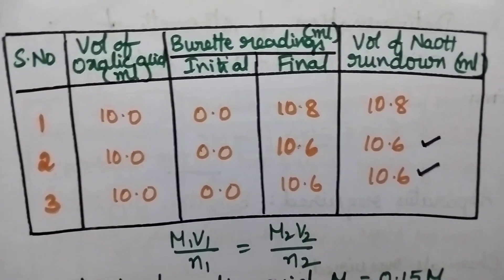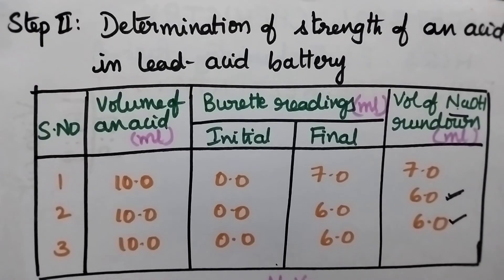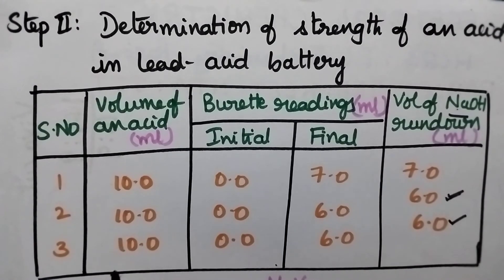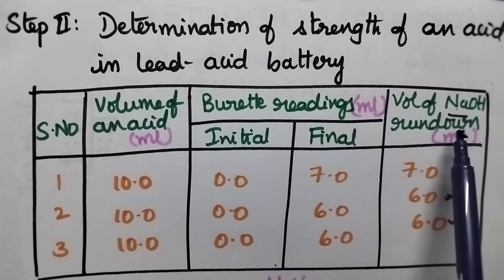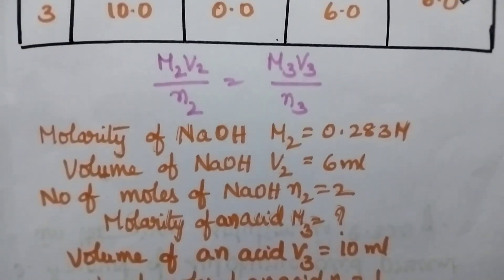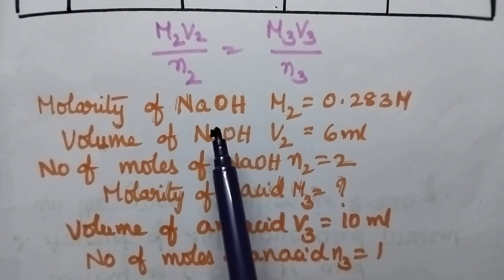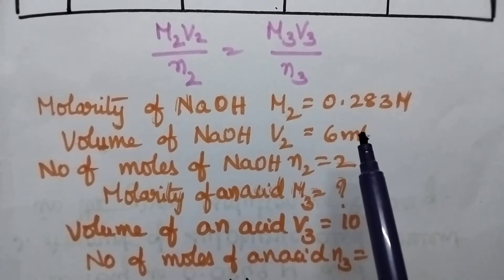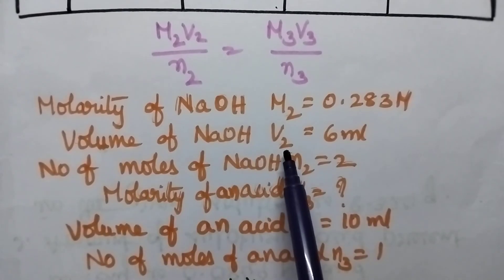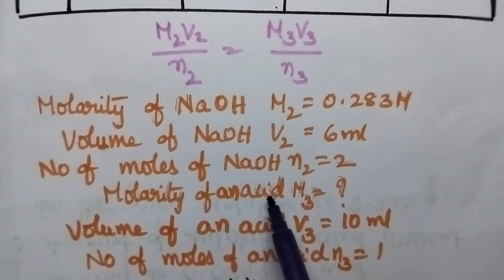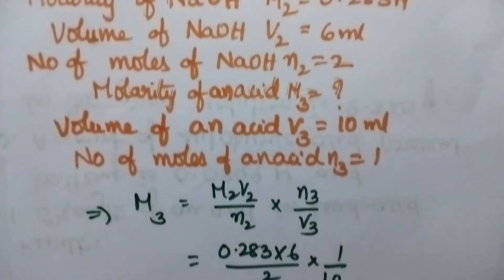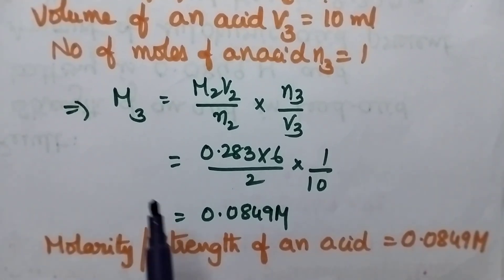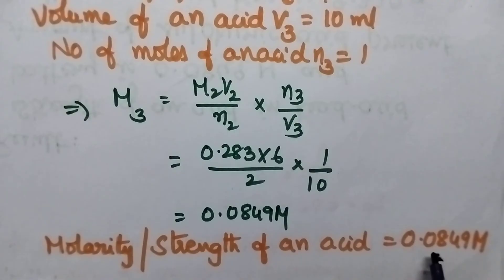Coming to the second step, it involves the estimation of strength of the sulfuric acid present in the lead acid battery. Sulfuric acid is pipetted out into a conical flask, to that 1 or 2 drops of phenolphthalein indicator is added, and it is titrated against NaOH solution until 2 concurrent readings are obtained. The strength of the sulfuric acid can be determined using the formula M₂V₂/N₂ = M₃V₃/N₃. Molarity of NaOH M₂ = 0.283 molar, volume of NaOH V₂ = 6 ml, number of moles of NaOH N₂ = 2, volume of acid V₃ = 10 ml, number of moles of acid N₃ = 1. M₃ = (M₂V₂/N₂) × (N₃/V₃). On substituting the values, the strength of the sulfuric acid is obtained as 0.0849 molar.